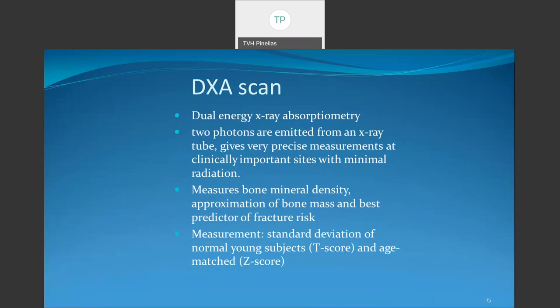Bone density results are measured as T-score or Z-score. T-score compares bone density to peak value at around age 30. Z-score compares bone density to age-matched patients. Fracture risk is determined by T-score; we only use Z-score for patients who are premenopausal.